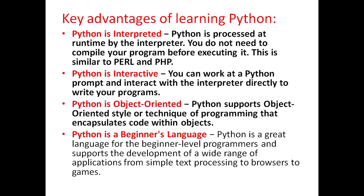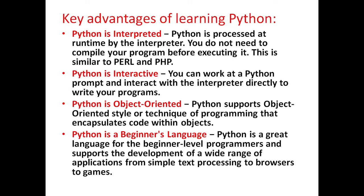Python is an object-oriented programming language. Python supports object-oriented style or technique of programming that encapsulates code within objects. Python is also a beginner's language — it is a great language for beginner-level programmers and it supports the development of a wide range of applications, from simple text processing to browsers to games.